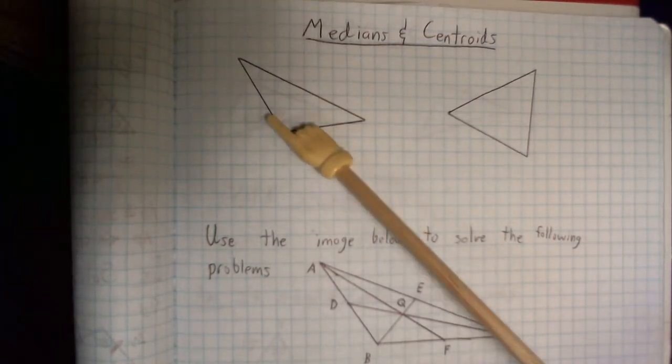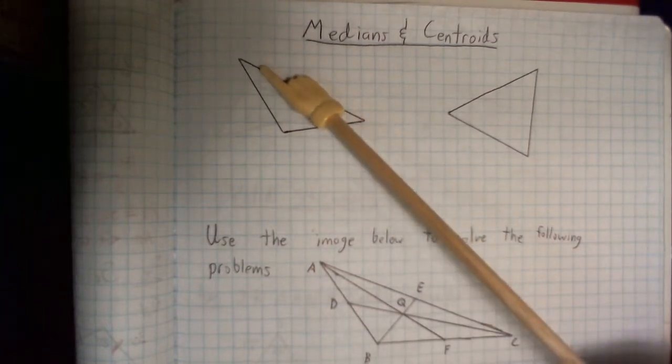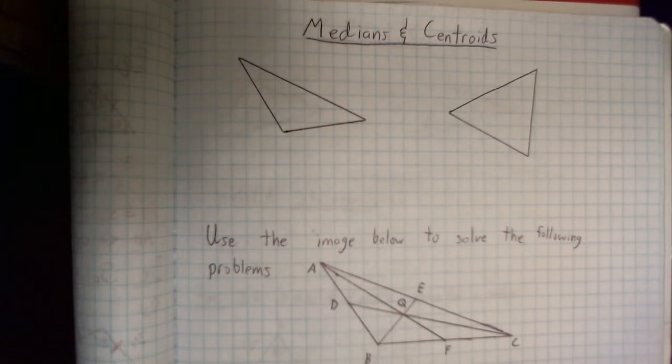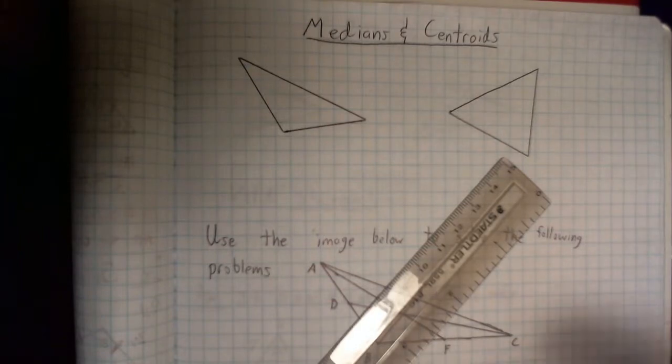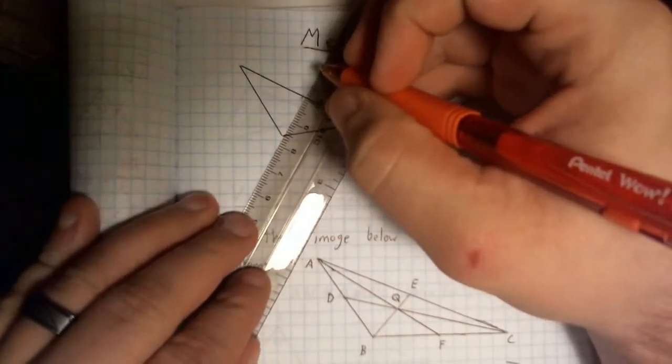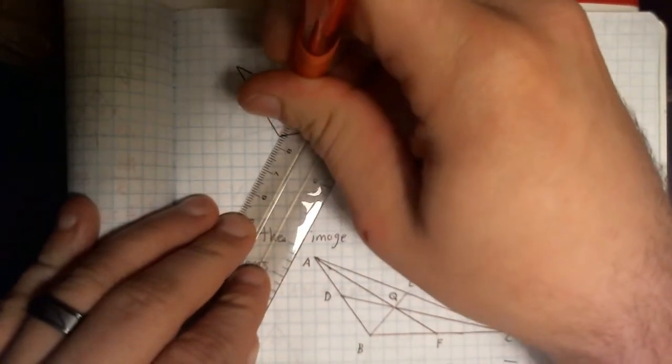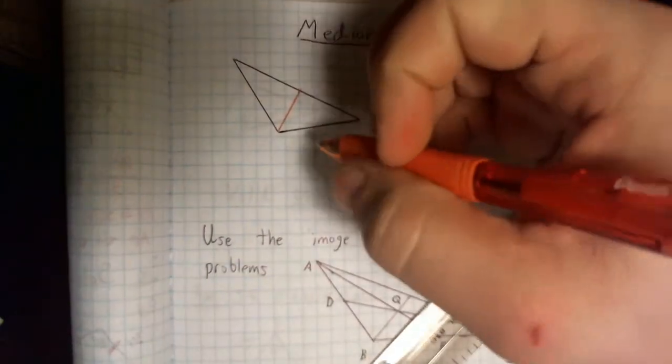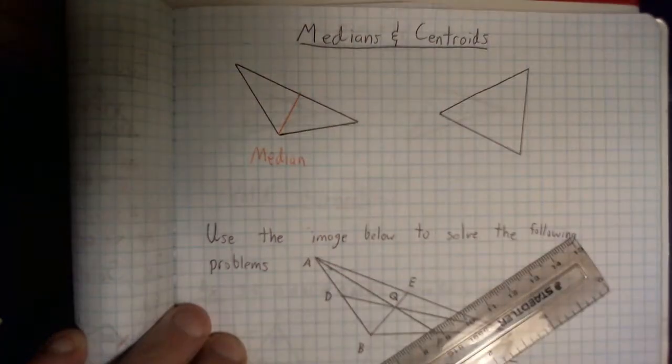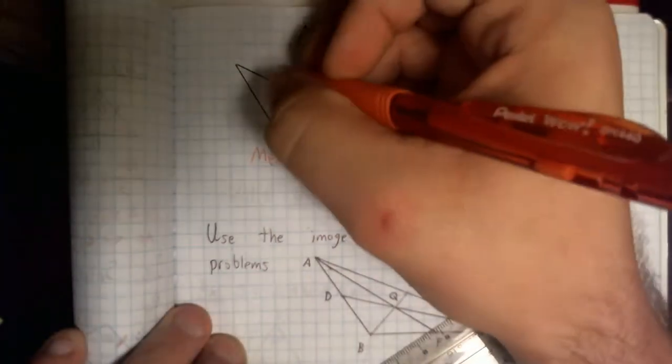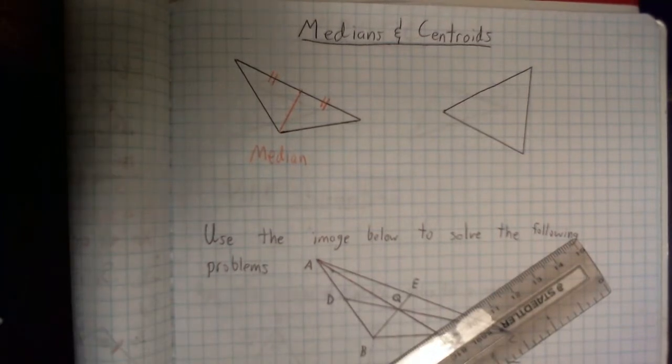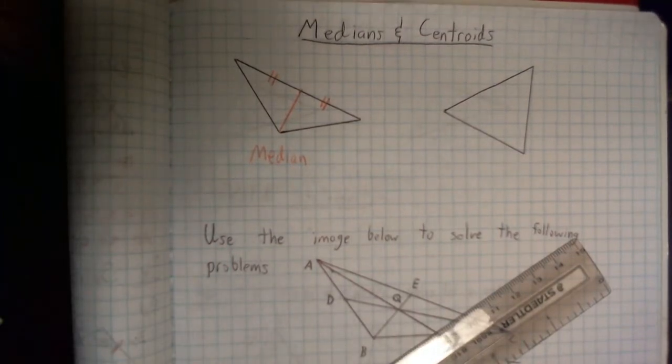Okay, so this is our vertex. These are the two sides that create the vertex. This is the opposite side. Okay, so if I was to draw in the median, it's going to go to the midpoint of the opposite side, and that is our median. Now, something that's pretty important about medians is that this opposite side becomes bisected into two congruent pieces. That's going to come up pretty important in a minute.